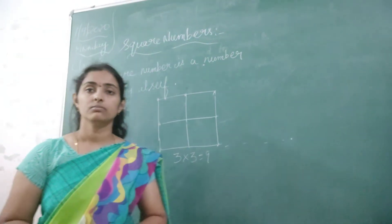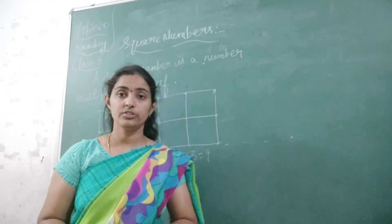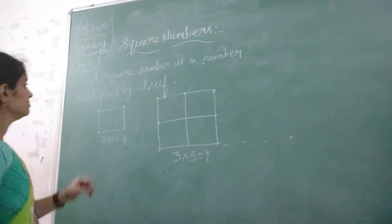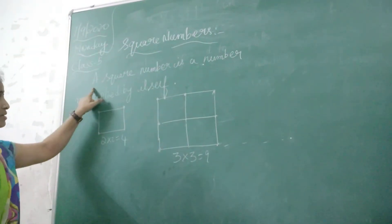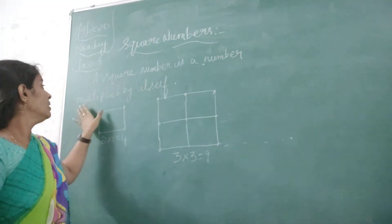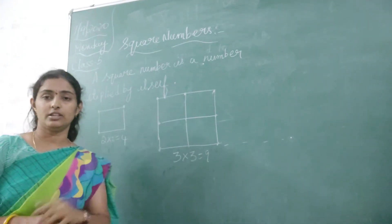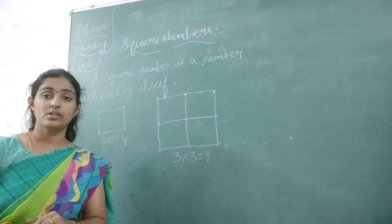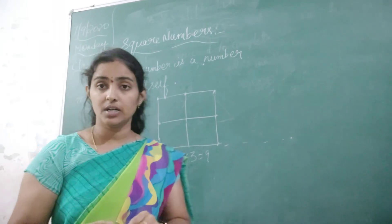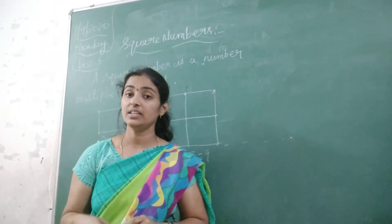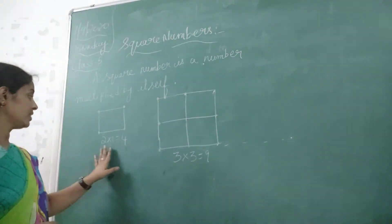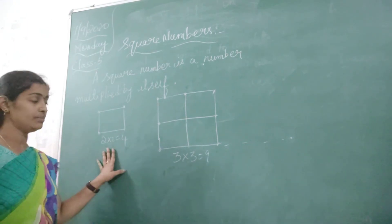Welcome back children. Now we are going to study about square numbers. A square number is a number multiplied by itself. What is a square number? A square number is a number multiplied by itself. Now you can see here for example.